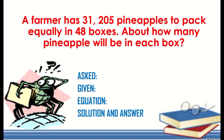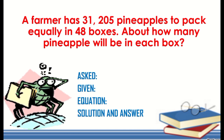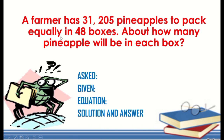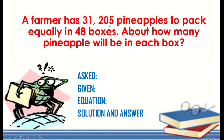What does the problem tell you to find? This is usually the question part that will identify whether we will divide, multiply, add, or subtract. Next, know what is given — these are the variables or numbers we see that we will later use in the equation. Here we see the word 'equally,' which means the farmer wants to divide 31,205 equally into 48 boxes, so we know we will use division.